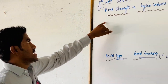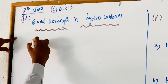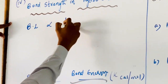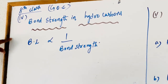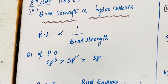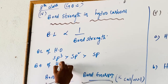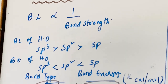Now coming to the fourth one, that is bond strength in hydrocarbons. As the bond length is decreasing, bond length is inversely proportional to bond strength. The bond length order of hybrid derivatives is sp3 greater than sp2 greater than sp. Therefore the bond energy or bond dissociation energy is reversed: sp3 less than sp2 less than sp hybrid carbon.